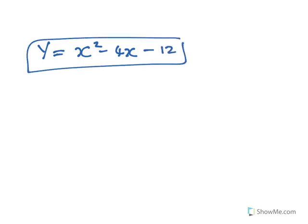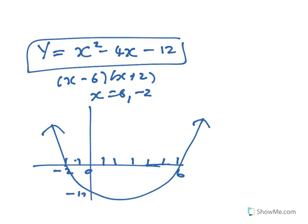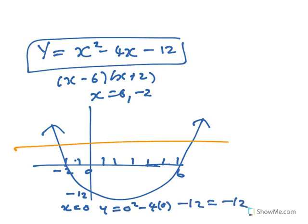Looking at this question, if you sketch it, you've got x-intercepts at x equals 6 and x equals minus 2. So if you sketch that, you have a positive parabola with those roots. The y-intercept would be minus 12, because when x equals 0, y is 0 squared minus 4 times 0 minus 12, which is minus 12. So at the moment it does not have an inverse. Going halfway between plus 6 and minus 2 gives 4, and divided by 2 the halfway point would be x equals 2, where the vertex is.